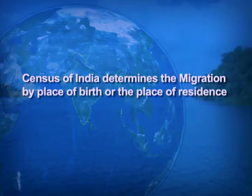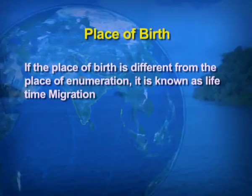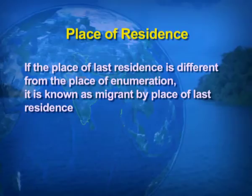The Census of India determines migration by place of birth or place of residence. If the place of birth is different from the place of enumeration, that is known as lifetime migration. And when we check the place of residence, if the place of last residence is different from the place of enumeration, that is known as migration by place of last residence.